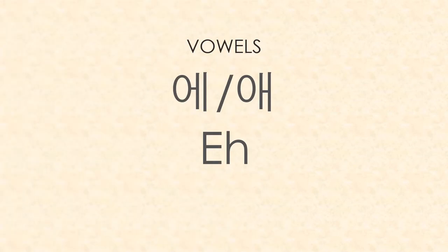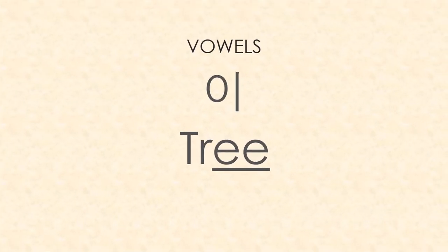Here we have two vowels that are both E. The first one is a little bit shorter E and the second is a little bit longer E. Historically people really differentiated the pronunciations, but in modern Korean they're almost the same — technically the first is a little shorter, the second a little longer. And here we have the E sound for tree — very simple E sound.